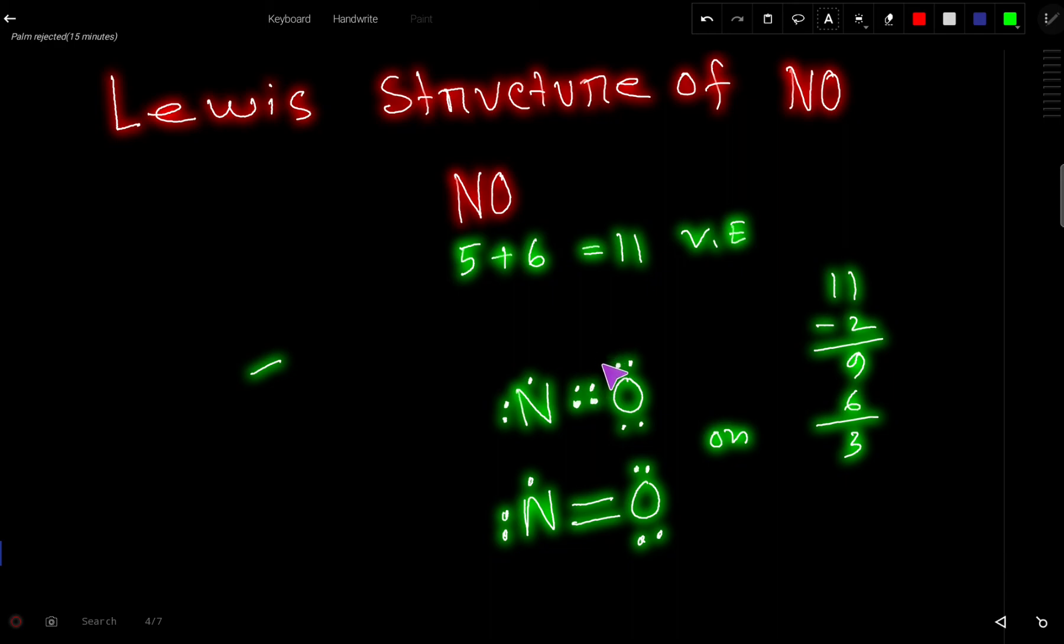If you want to find out the formal charge for this nitrogen, for formal charge you have to take half of the bonding electrons. This nitrogen has five. We know that nitrogen has five in a neutral atom. So here the formal charge of nitrogen is zero.